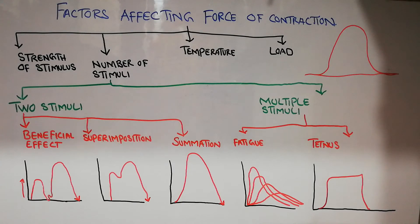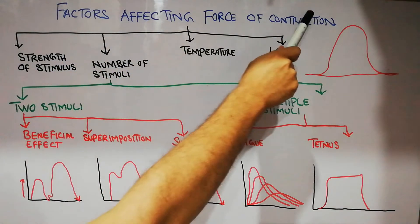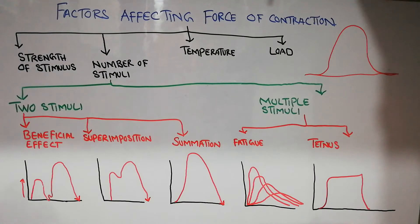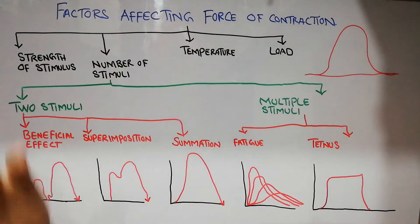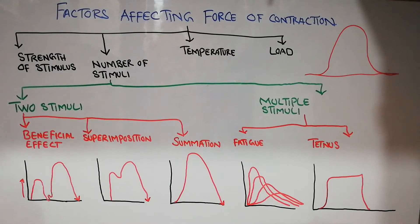In this lecture we are going to discuss the factors affecting the force of contraction of a muscle. We were previously discussing the properties of skeletal muscles, including excitation and contractility. Now we are discussing the factors which affect the contractility or the force of contraction of skeletal muscles. There are basically four basic factors which affect the force of contraction of a muscle.